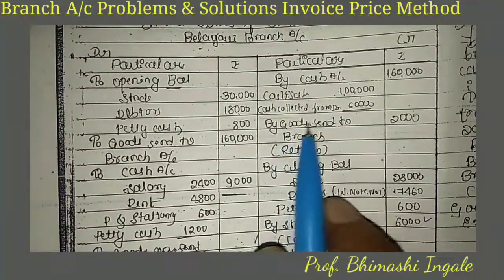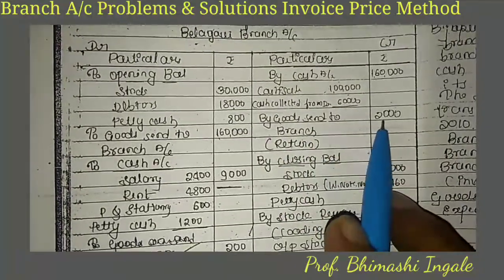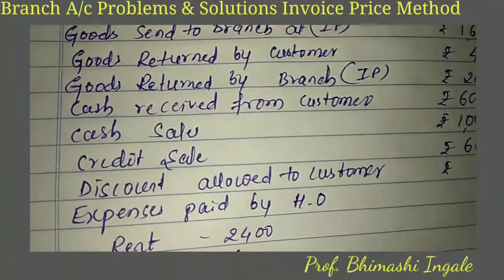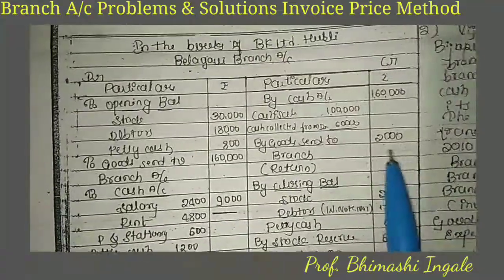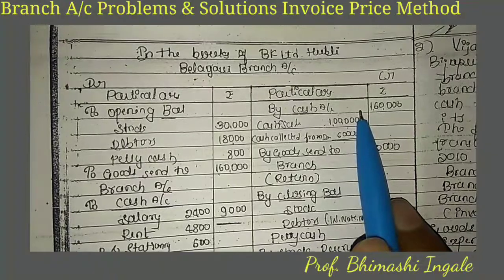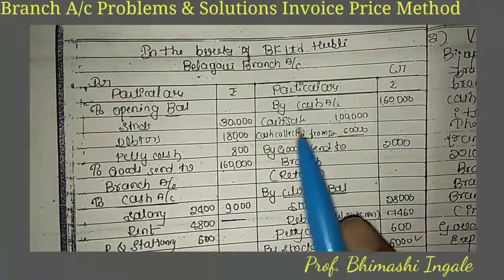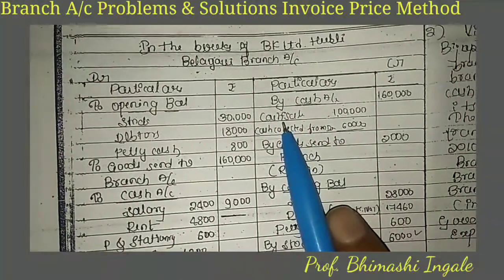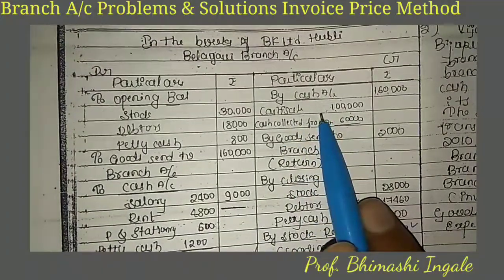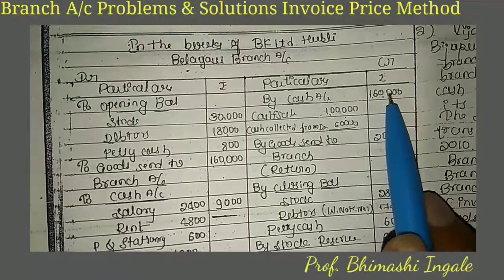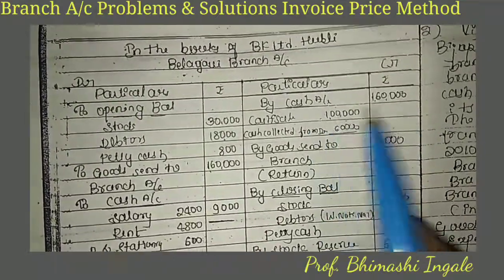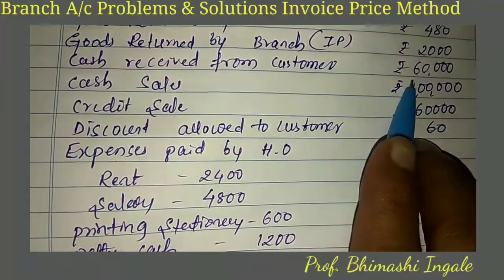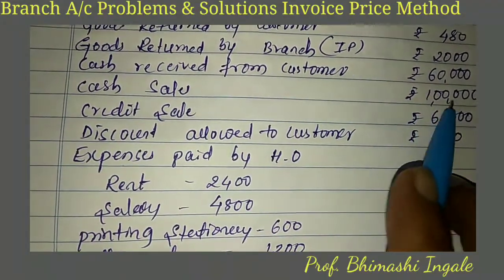Goods returned by branch at invoice price: 2,000 — this goes to the credit side as goods returned by branch 2,000. On the credit side, cash sales is 1,00,000 and credit sales is 60,000.